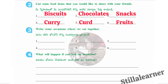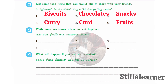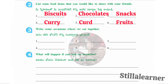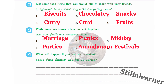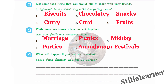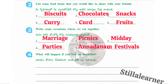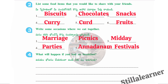The third section asks: write some occasions where we eat together. The answers are: marriage, picnics, midday meals, parties, annadanam, and festivals.